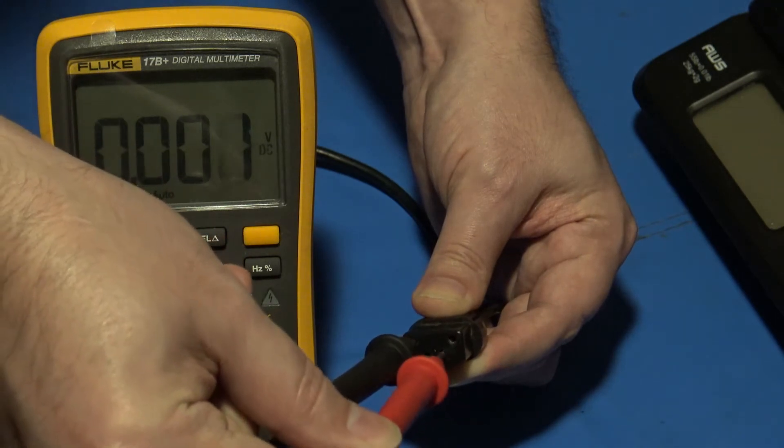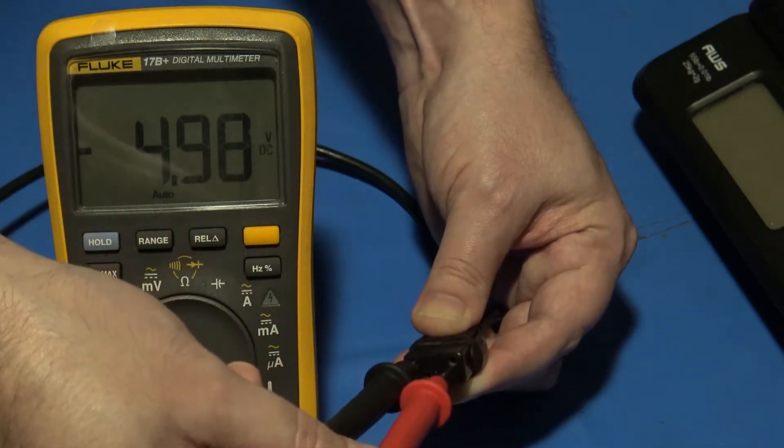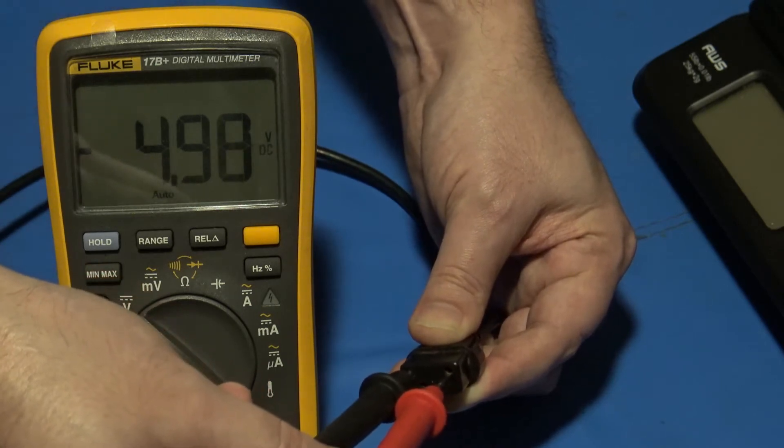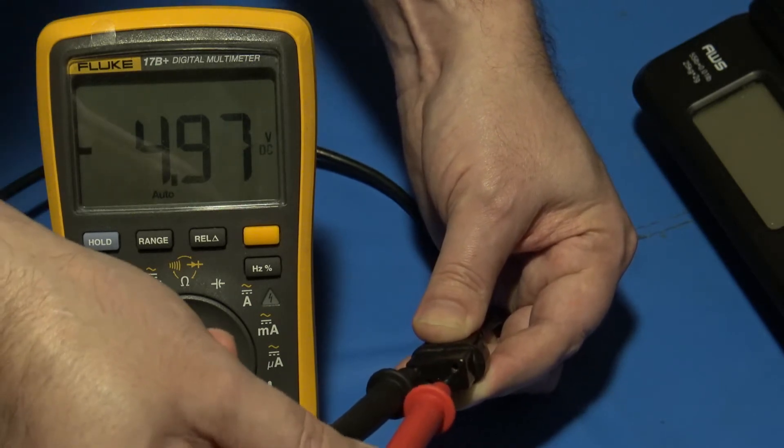The one just next to it and just below is your negative five. So on this one, it's reading about negative 4.98, 4.99. That's about right.